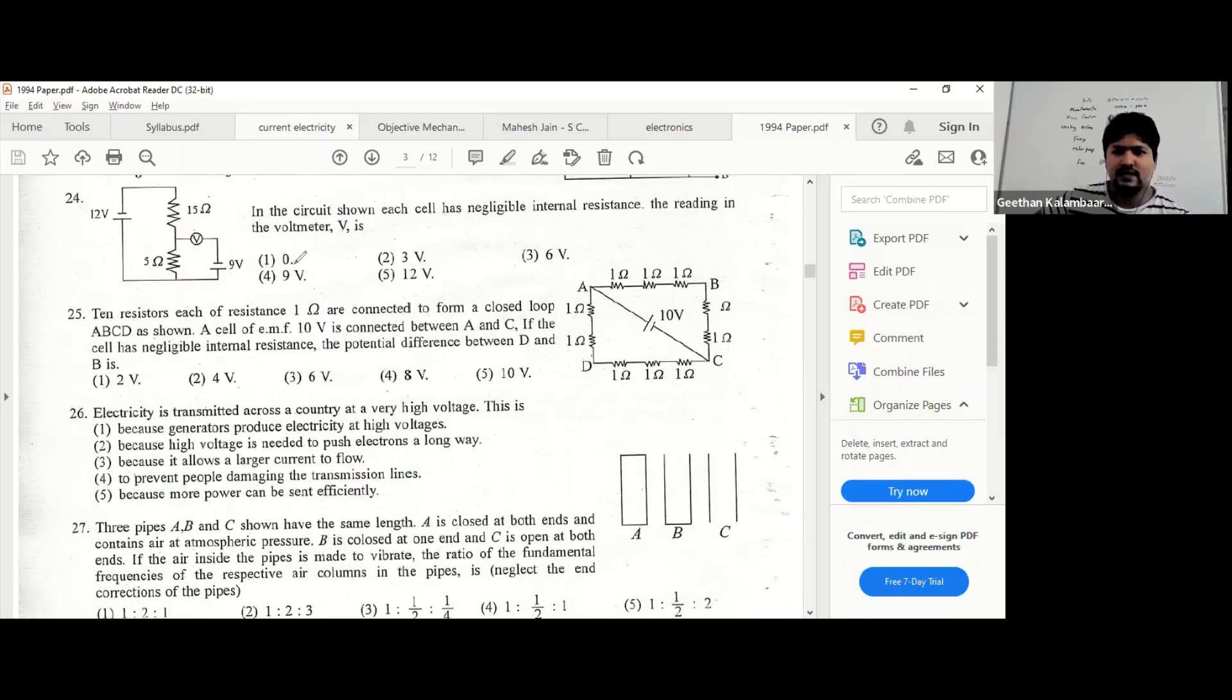Each cell has negligible internal resistance. The reading in the voltmeter - so guys, what type of voltmeter is this? If they have not given you data to get the voltmeter's resistance, or if they have not given you a clue that there is resistance in the voltmeter, what we do is take the voltmeter as one with infinite resistance.